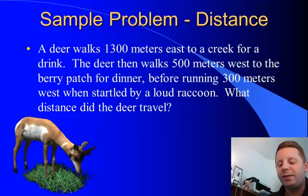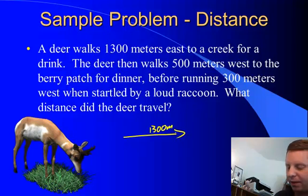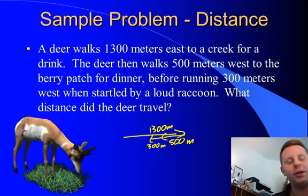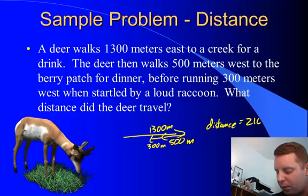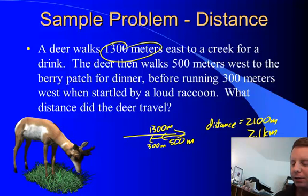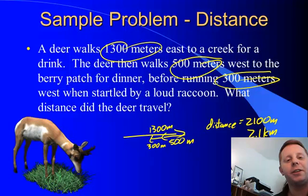A sample problem: if we have a deer that walks 1,300 meters east to a creek for a drink, then walks 500 meters west to the berry patch for dinner, and then runs 300 meters west when scared by a raccoon, what total distance did the deer travel? Well the deer traveled a distance of 2,100 meters or 2.1 kilometers. That's 1,300 meters plus 500 meters plus 300 meters, and that's a scalar. It doesn't need a direction, it has magnitude only.